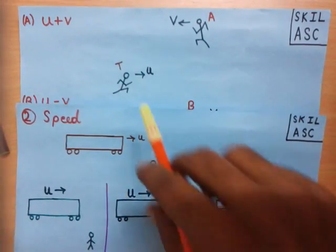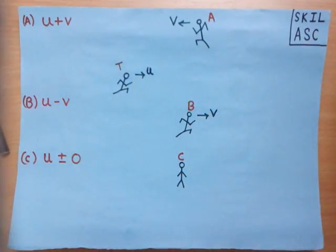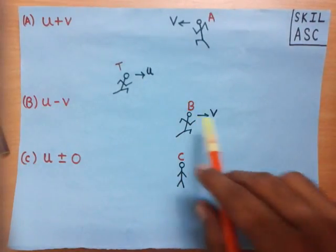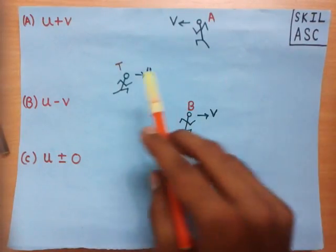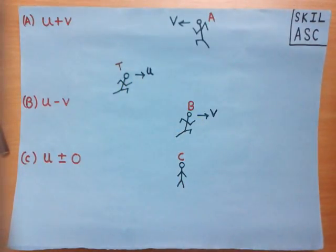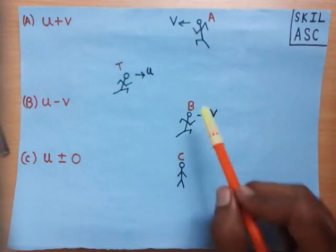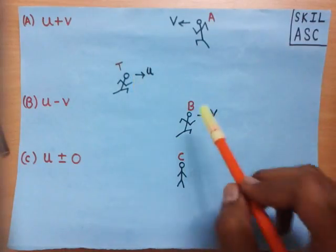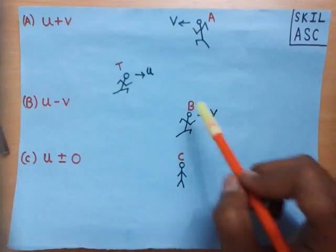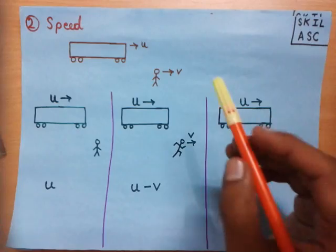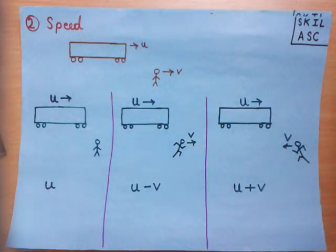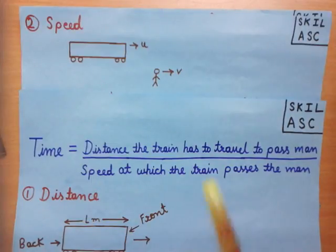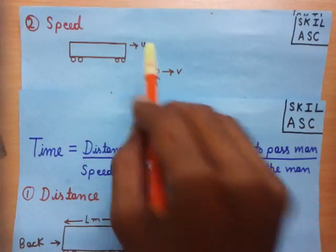T is moving in the right direction with speed U. B is moving in the right direction with speed V, and C is not moving at all. It is obvious that T will take much more time to pass B compared to the time T takes to pass C. But in both cases, the speed of T is the same — U. Yet T takes different time to pass B and C. So clearly, the time taken by T to pass B and C does not just depend on U — it also depends on the speed of persons B and C. Therefore, the time taken by the train to pass the man also depends on speed V.